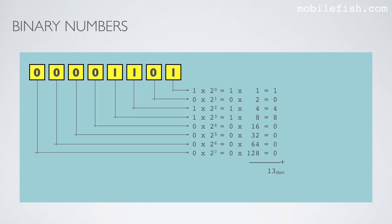So here is an example of a binary number consisting of 8 bits: 00001101. To convert this binary number into a decimal number, all you have to do is the following. You write down these binary digits over here on the left side.